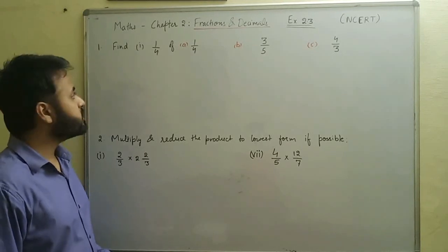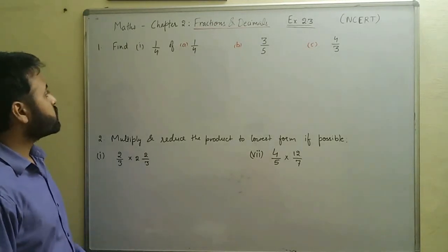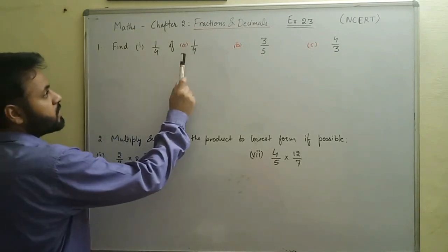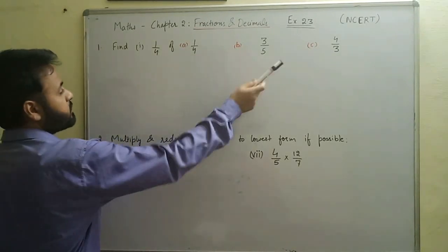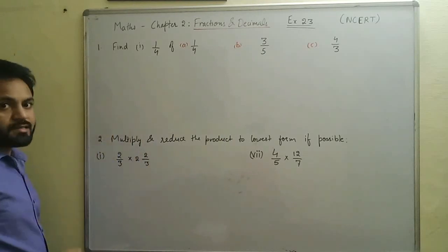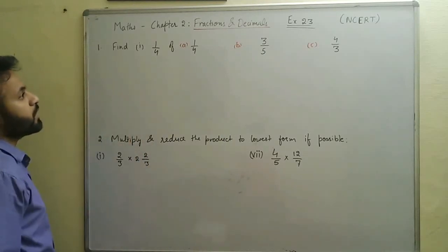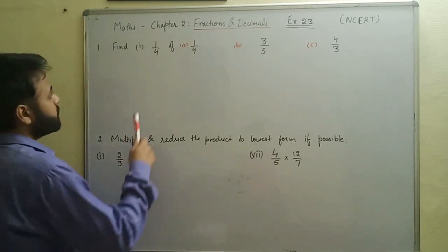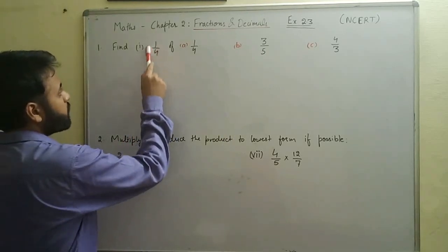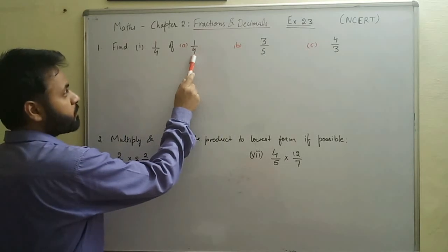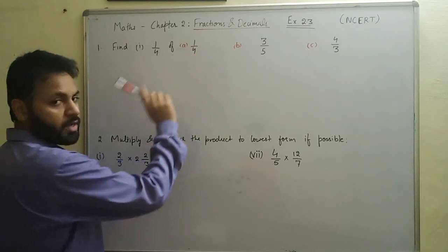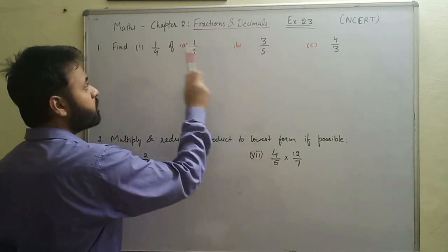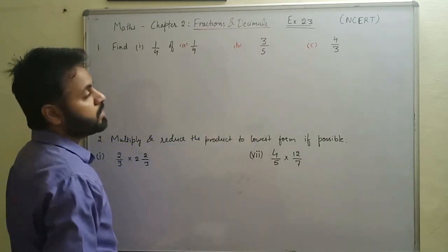In question number one, we have to find one by four of something. It has three parts: a, b, and c. In part a, we find one by four of one by four; in part b, one by four of three by five; and in part c, one fourth of four by three. We are going to do all three parts.